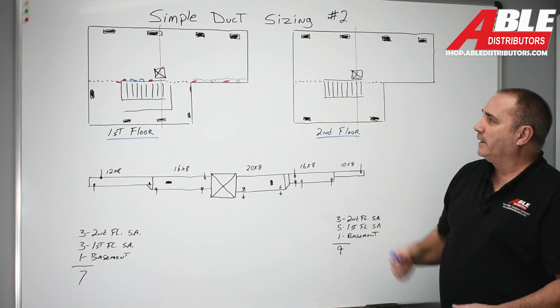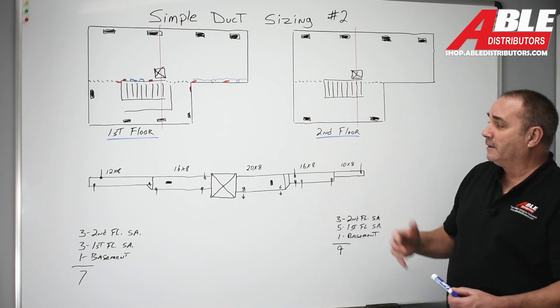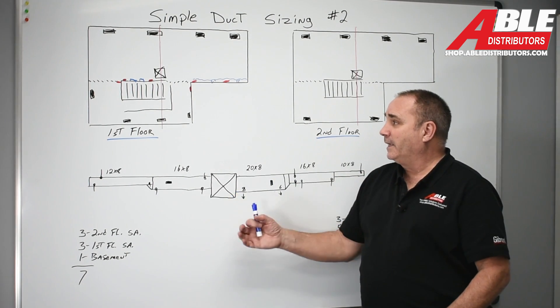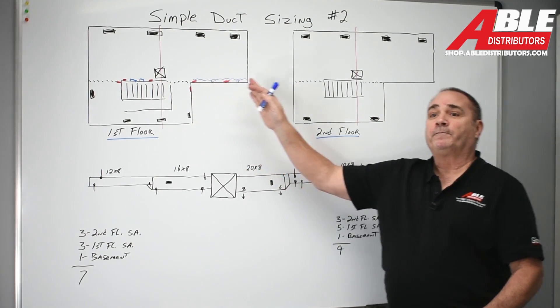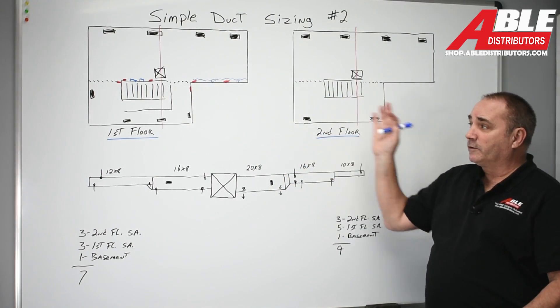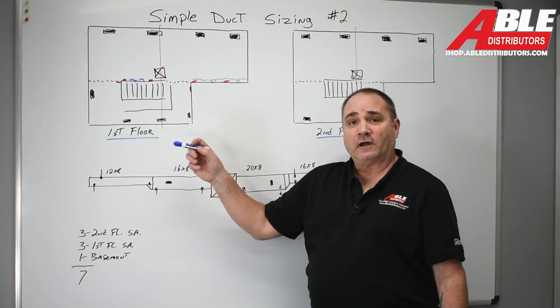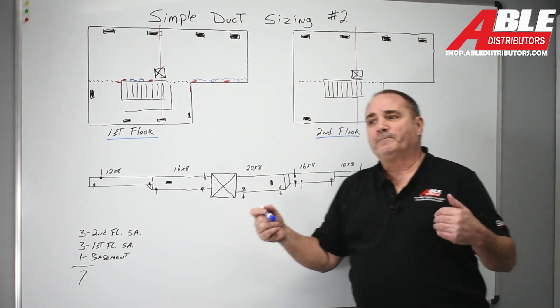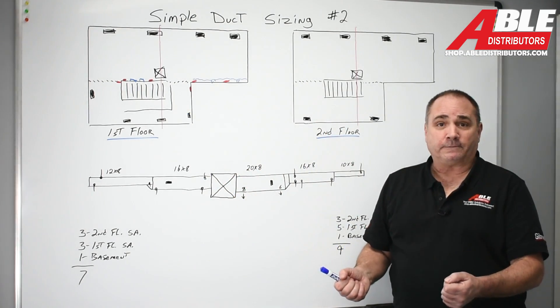So again maybe my sample home was a little too simple but that's it in a nutshell on how I take on the blueprint. I pick my spot for the furnace. I figure out how many supplies left and right I'm going to have. Same thing with the returns. I draw it on there. I figure out all my difficult stuff ahead of time so that when I actually go out to the house I have a blueprint with everything written on it.